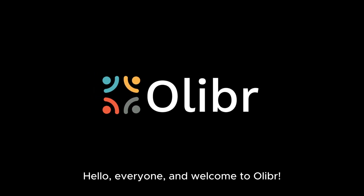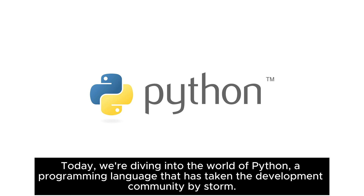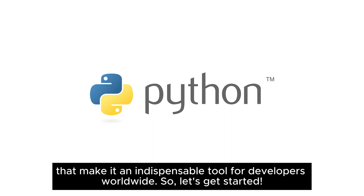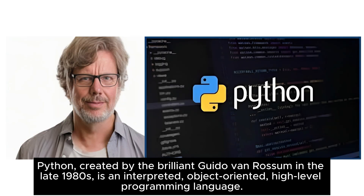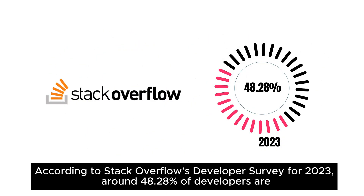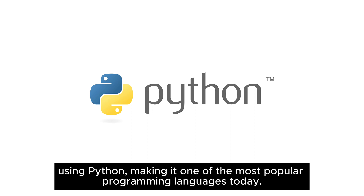Hello everyone and welcome to Olibr. Today we're diving into the world of Python, a programming language that has taken the development community by storm. We'll explore what Python is, its advantages, disadvantages, and various applications that make it an indispensable tool for developers worldwide. Python was created by Guido van Rossum in the late 1980s and is an interpreted, object-oriented, high-level programming language. According to Stack Overflow's developer survey for 2023, around 48.28% of developers are using Python, making it one of the most popular programming languages today.